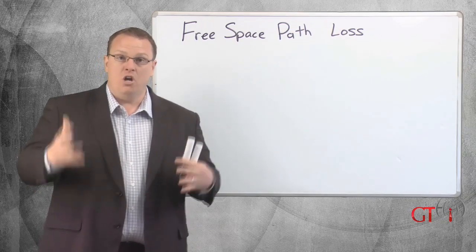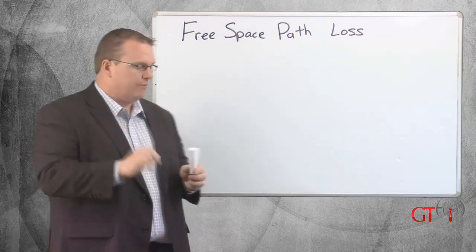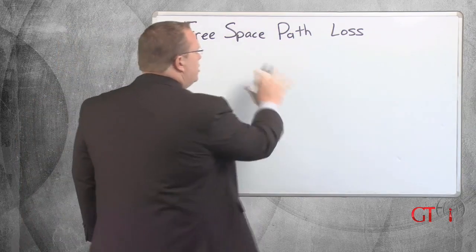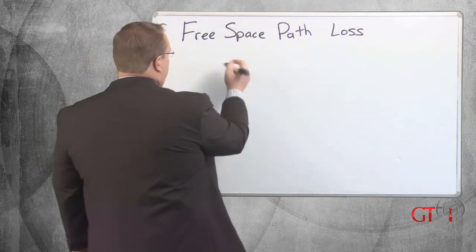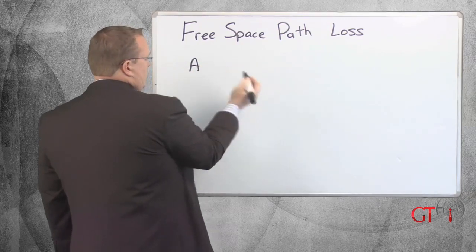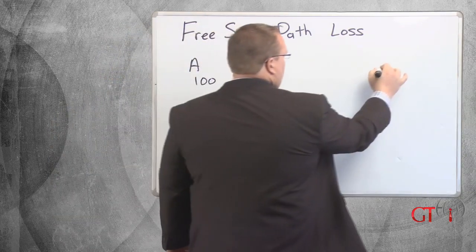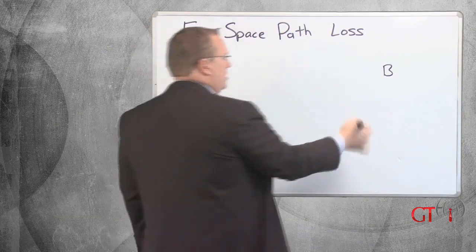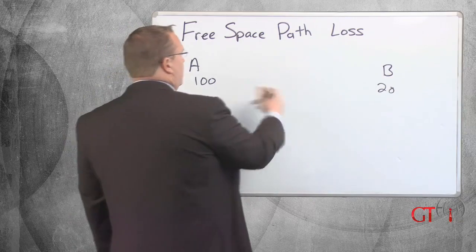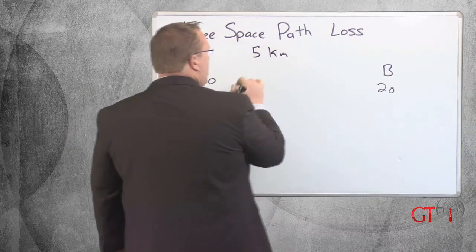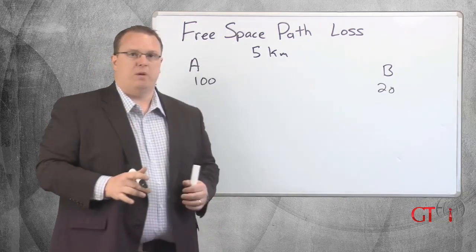So why is it that lower frequencies are more effective from a farther distance? This is the other part of free space path loss. Path loss simply means: if I start at point A with a certain amount of signal — let's say 100-somethings — and when I get to location B I have less signal, maybe 20-somethings, over maybe 5 kilometers. Why did I lose that? It's more than just attenuation — it's free space path loss.